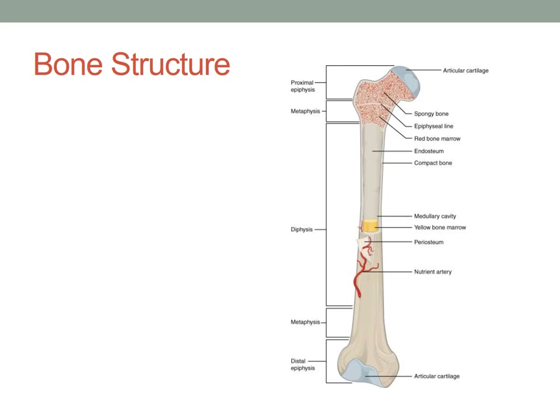Just below that, you see the area where the red bone marrow is, which is actually in the metaphysis. And then below that you have the endosteum, which is the inside lining of the bone. The shaft of the long bone is composed of compact bone, and the shaft also has the medullary cavity, which is where the yellow bone marrow is.